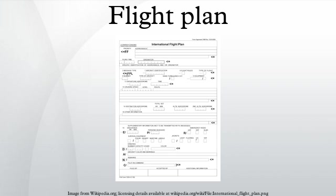Aircraft efficiency increases with height. Burning fuel decreases the weight of an aircraft, which may then choose to increase its flight level to further improve fuel consumption. For example, an aircraft may be able to reach FL290 early in a flight, but step climb to FL370 later in the route after weight has decreased due to fuel burn off.